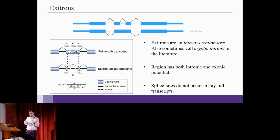So exotrons are sometimes called intron retention loss. It's also sometimes called cryptic introns because the splice sites within the exon are sometimes called cryptic splice sites. The important thing is that the exotron region has both intronic and exonic potential, and that's why we call it an exotron. It's like an exon-intron mashup. And for our study, what we do is we make sure that the splice sites do not occur in any annotated transcripts. So they're completely novel splice sites. When we talk about exotron splicing, we talk about completely novel intron events.